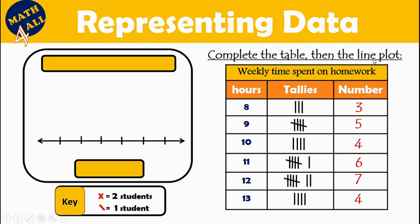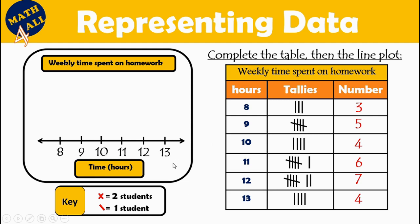After finishing the table we complete the line plot. First we need a title — 'Weekly Time Spent on Homework.' Then we complete the number line. The unit of measurement is hours. We start from 8 to 13, so the number line goes from 8 to 13 hours, starting from the smallest number to the biggest. The key: X means 2 students and half X equals 1 student.